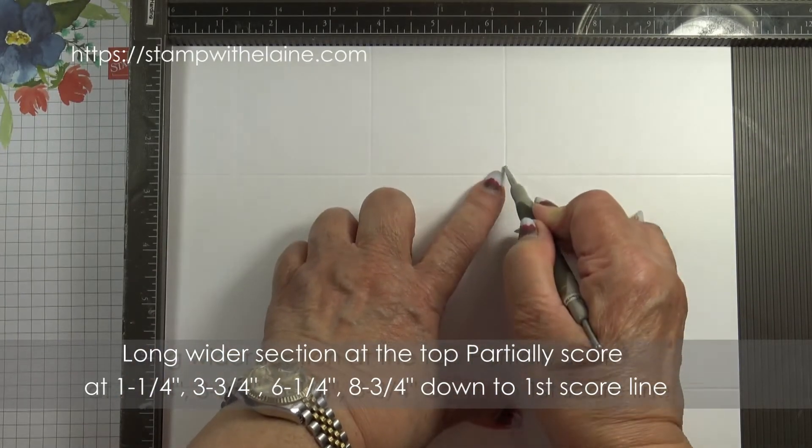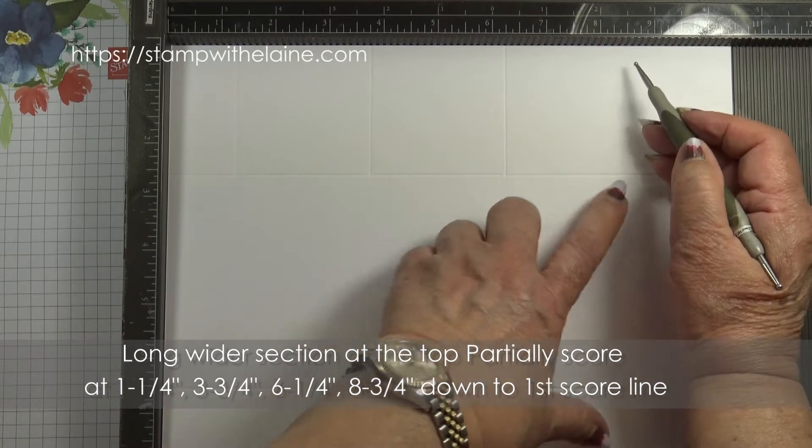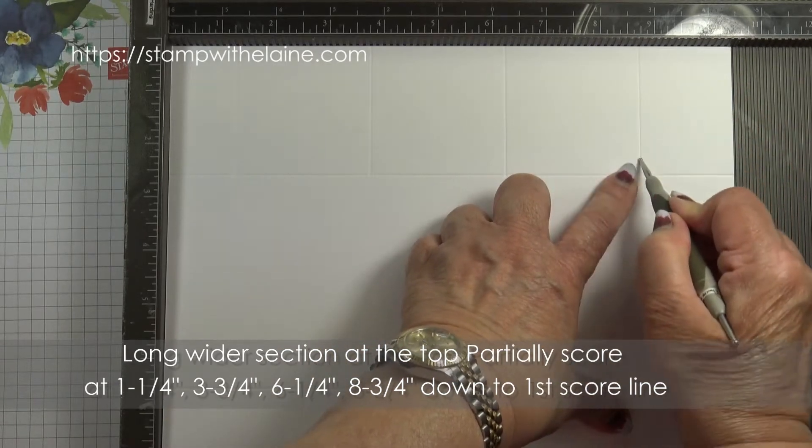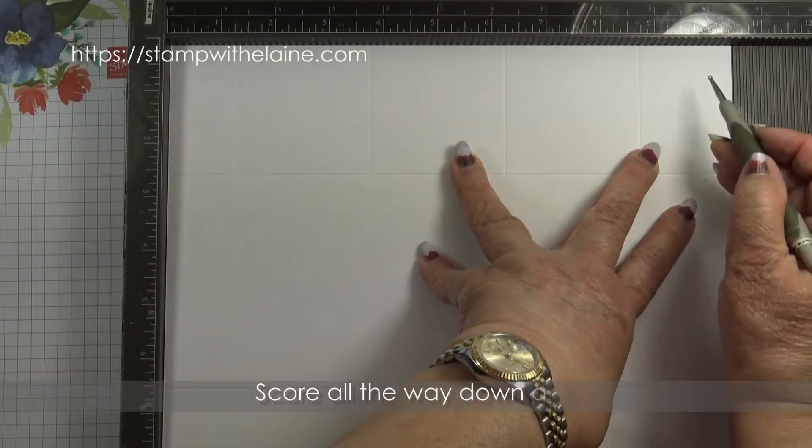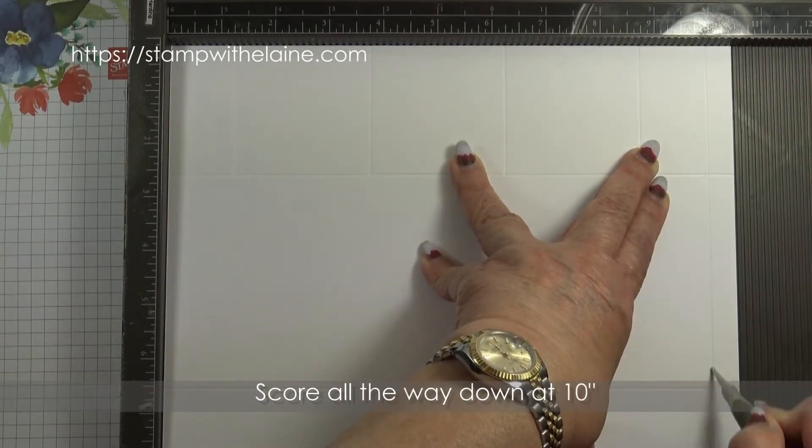Six and a quarter inches down to the score line, and eight and three quarters inches. All this is partial scoring, okay. And then at ten inches you want to score all the way down.